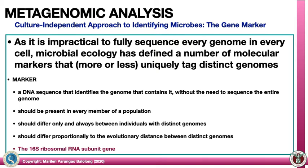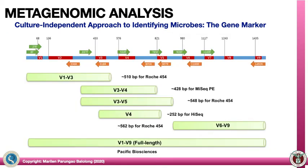As it is impractical to fully sequence every genome in every cell, microbial ecology has defined a number of molecular markers that can more or less uniquely tag distinct genomes. A marker is a DNA sequence that identifies the genome containing it without the need to sequence the entire genome. The marker should also be present in every member of the population — it is conserved — yet differ between individuals with distinct genomes, and it will differ proportionally to the evolutionary distance between distinct genomes. The marker utilized is the 16S ribosomal RNA subunit gene.